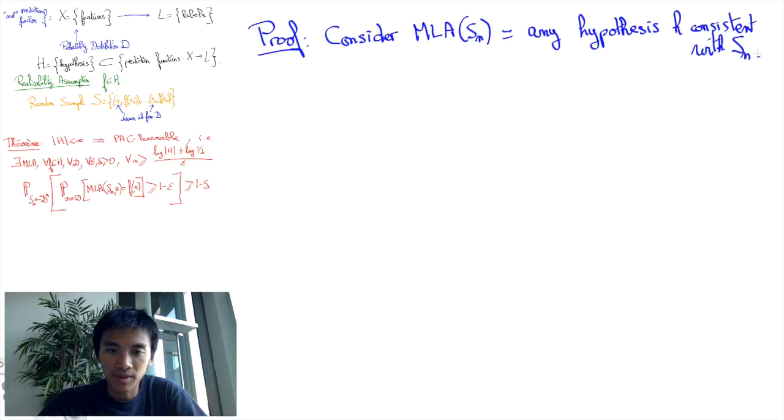We will merely assume that the machine learning algorithm picks any prediction function of the set H that is consistent with the sample set. Crucially, the sample set will likely cover the most likely features that the machine learning algorithm will be judged on. In fact, the way we shall prove the theorem is by upper bounding the probability that the sample set does not cover enough of the space of features.